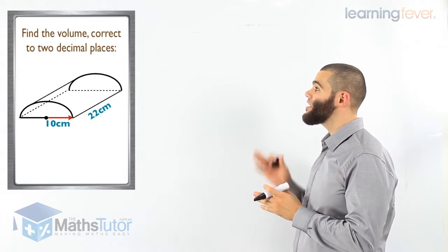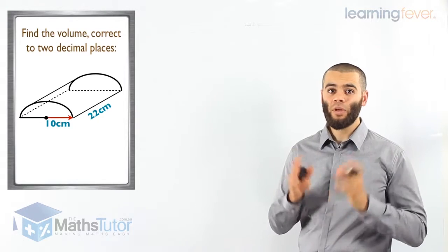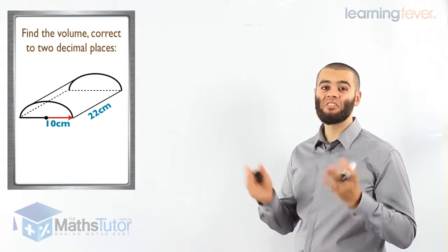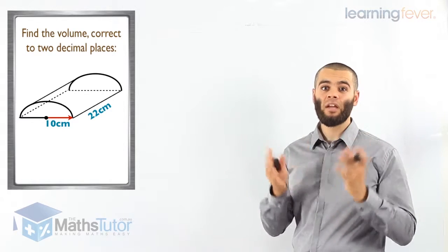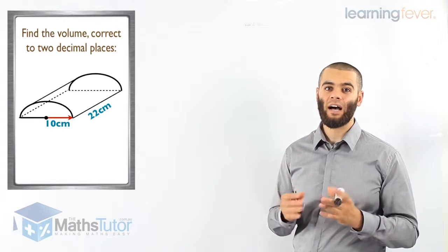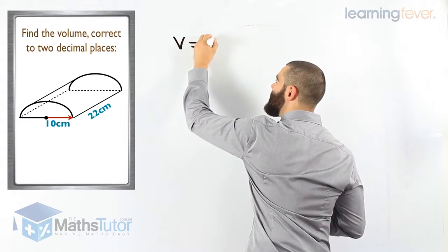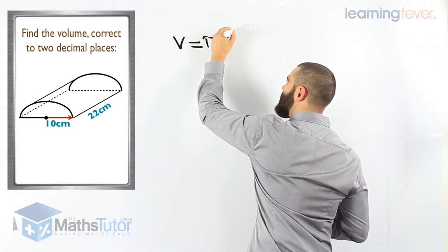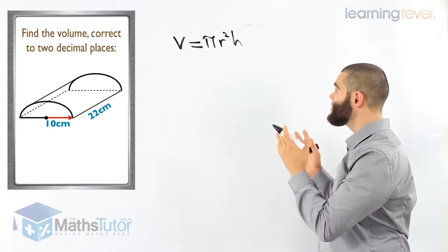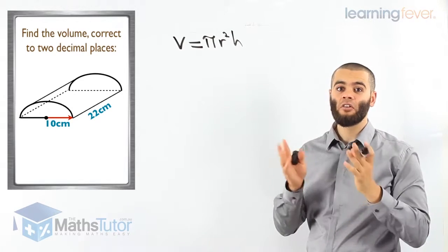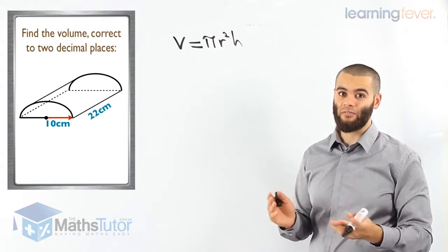The next question says: find the volume of this figure correct to two decimal places. We can tell that this is not a full cylinder — it's in fact half a cylinder. So when we work out the volume, we are going to half the volume. V equals pi r squared h is the formula for a full cylinder, so we will work out the full cylinder volume first and then half it.